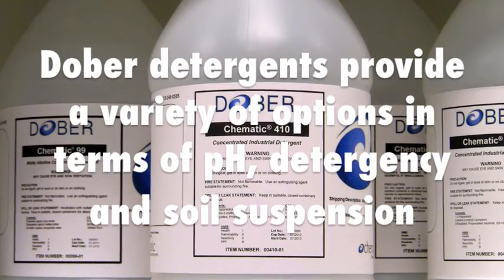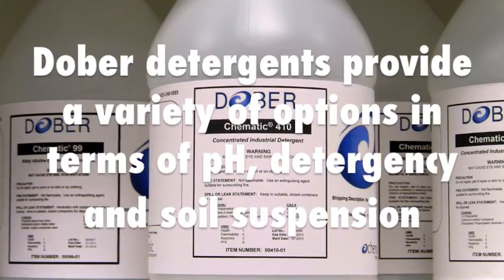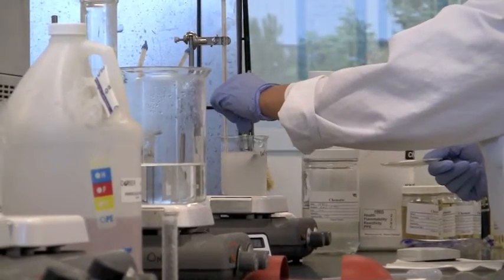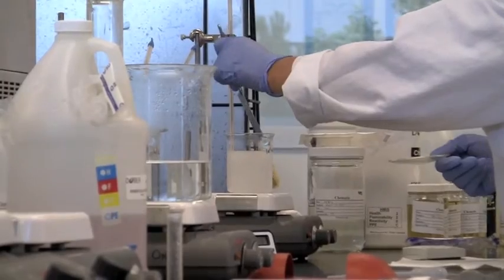Dober's comprehensive line of formulated detergents provides a variety of options in terms of pH, detergency, and soil suspension. Dober analytical chemists first screen the detergents with the soils to determine the likely candidates for each residue.